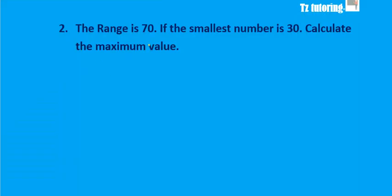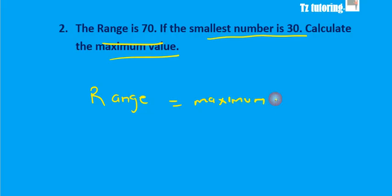Let's go on to the second example. You're given a range. Again, this is an inverse question because they are not asking you to calculate the range. They give you the range. The range is 70. And they give you the smallest number, it's 30. So you have to calculate the maximum value.